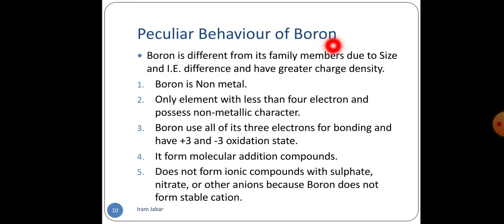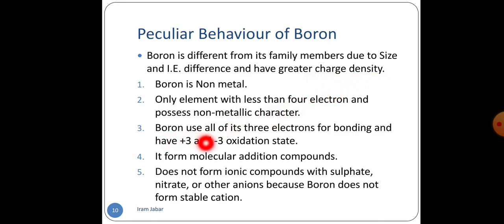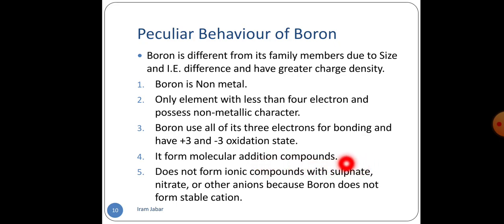Boron is different from its family members in many ways. Boron is a non-metal and is the only element with fewer than 4 electrons that is still a non-metal — this exceptional behavior is due to the high charge density of boron. Boron may use all of its 3 electrons for bonding, and when it does so, it attains a +3 or -3 oxidation state. It forms molecular addition compounds, but it does not form any compound with sulfate, nitrate or other anions, because boron does not form a stable cation with these anions.